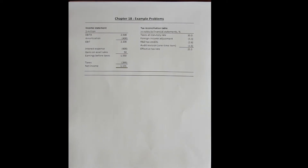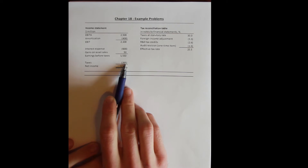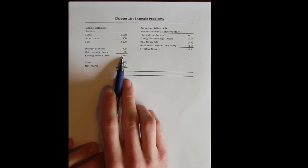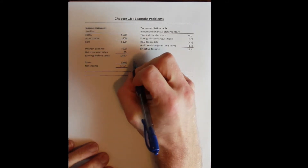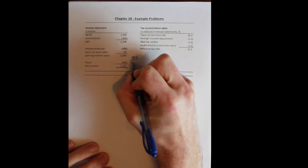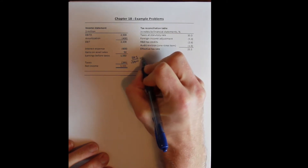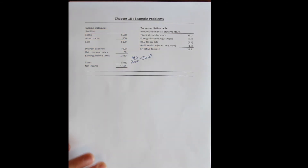Side by side, let's look at their tax reconciliation table, which is typically reported in the 10-K. It tells us how we get from the firm's statutory tax rate — the rate they should be charged; the US top corporate tax rate used to be 35% — through any adjustments, to the effective tax rate, which is what the firm is actually paying. They have a statutory rate of 35% but an effective rate of 25.5%. They pay 395 million dollars in taxes on 1.55 billion in earnings. Dividing 395 by 1550 gives us 25.5% — the effective tax rate.